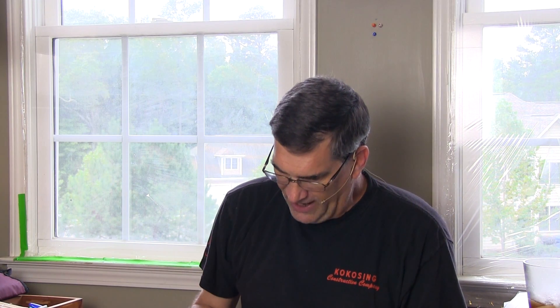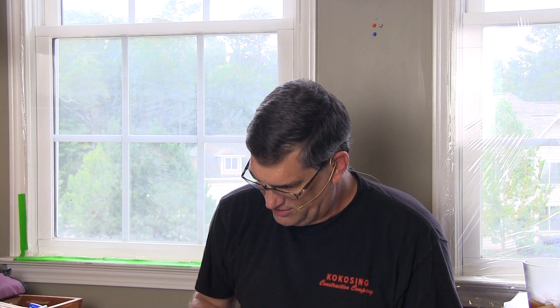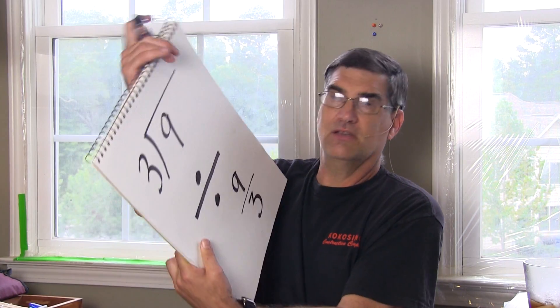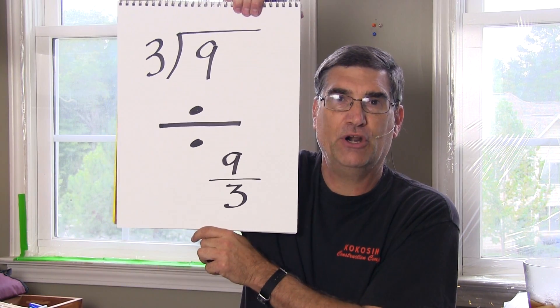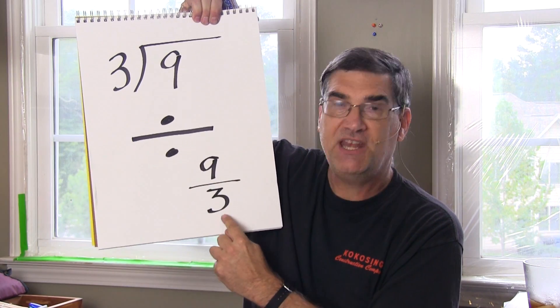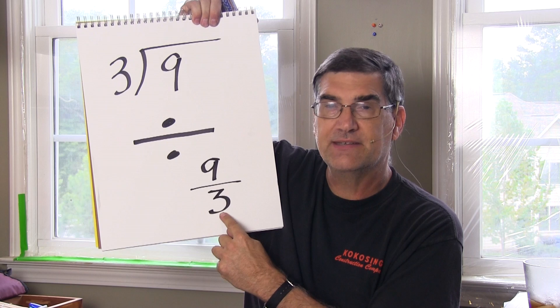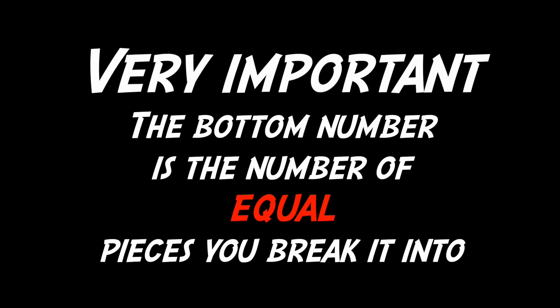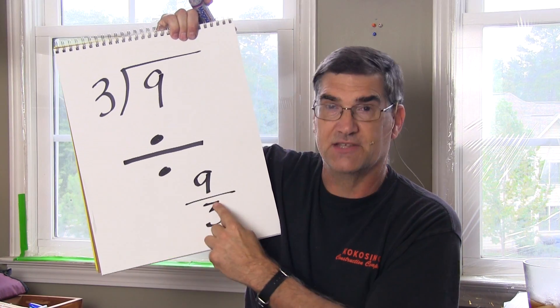So if I were to rewrite nine divided by three in the long division way as a fraction, it would be nine divided by three or nine thirds. And the question that's being asked by this fraction is how many threes fit into nine? And the answer is three.